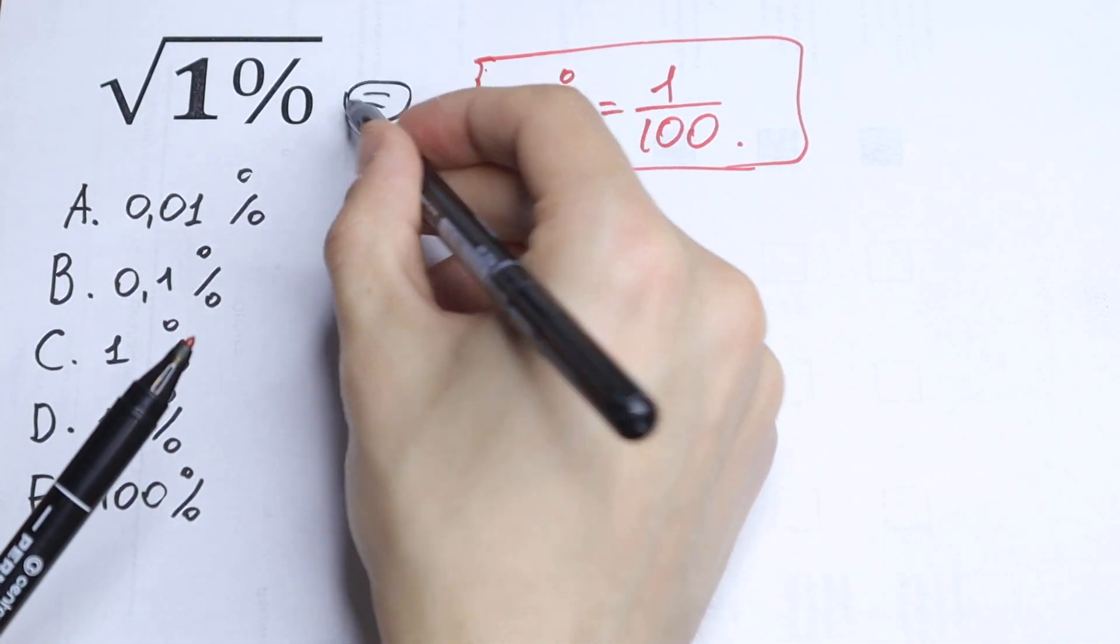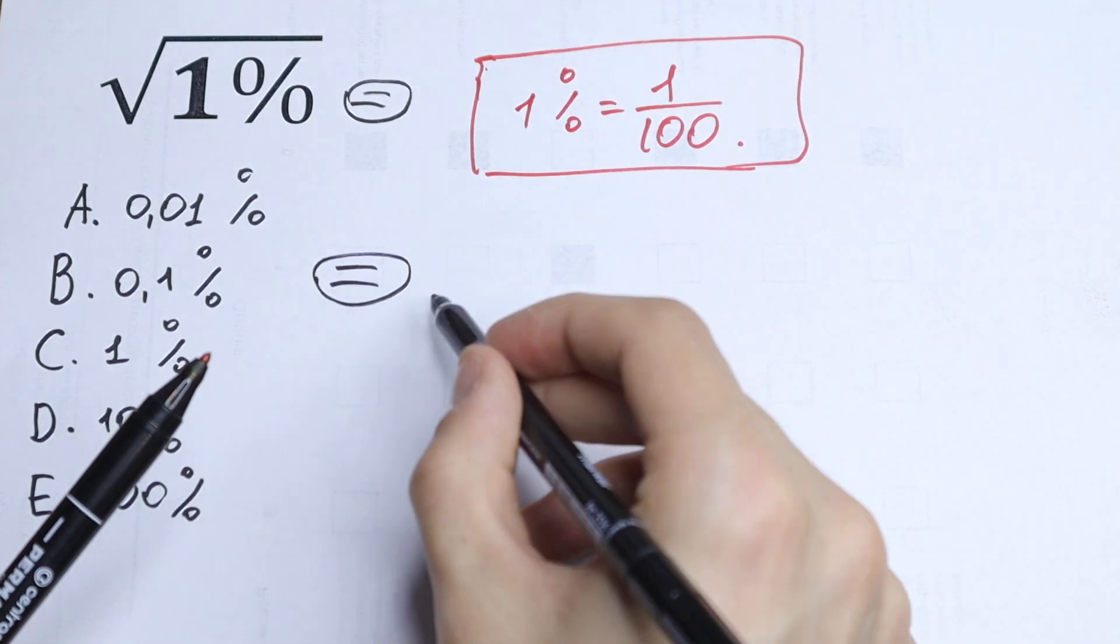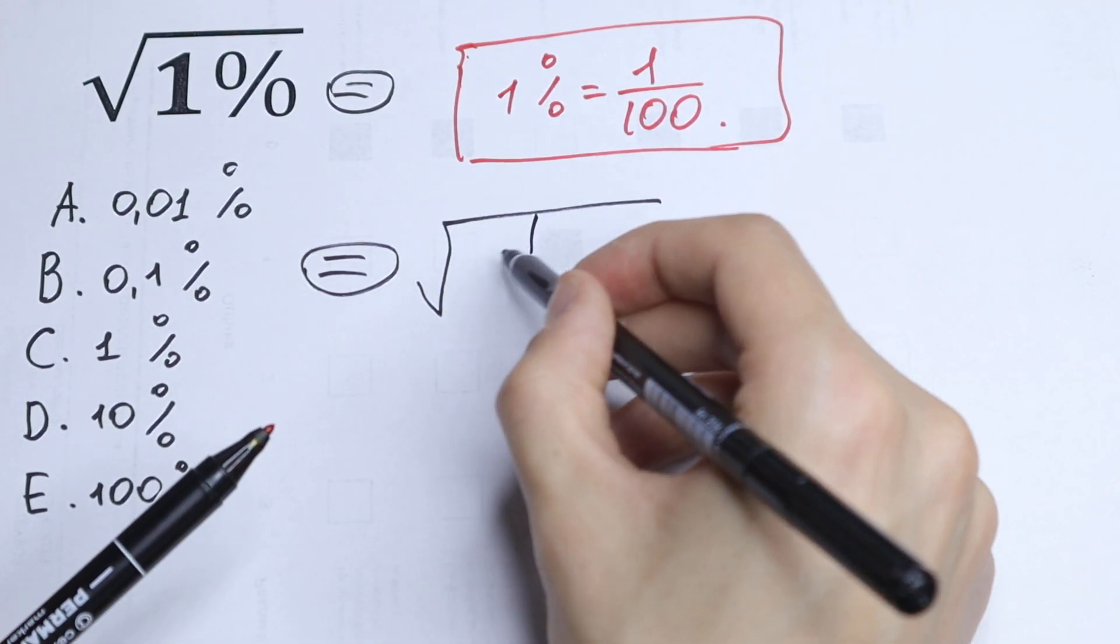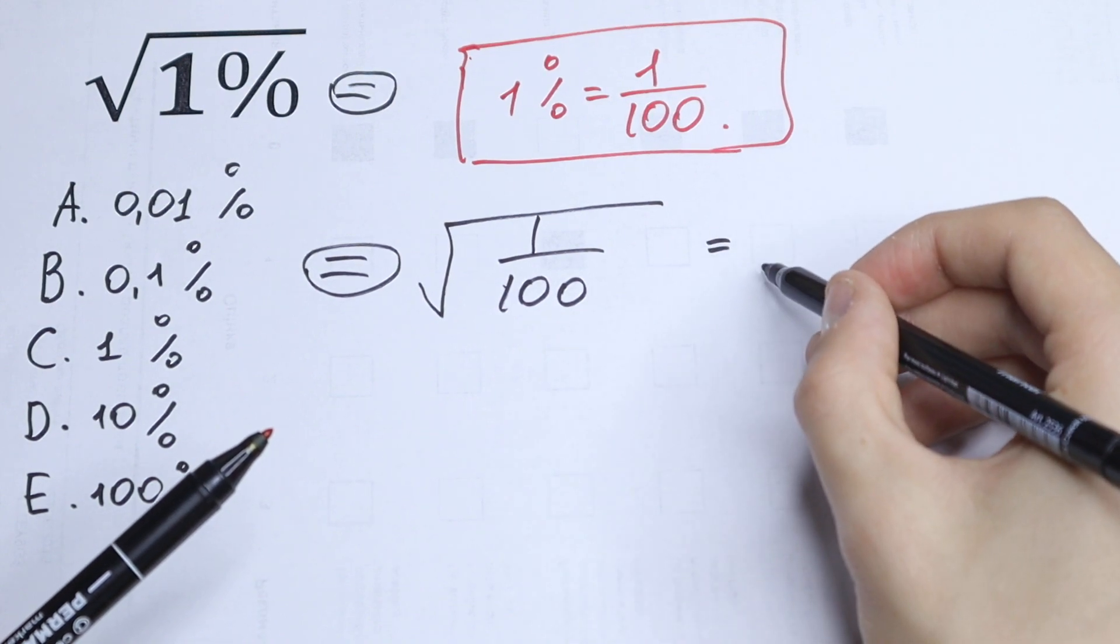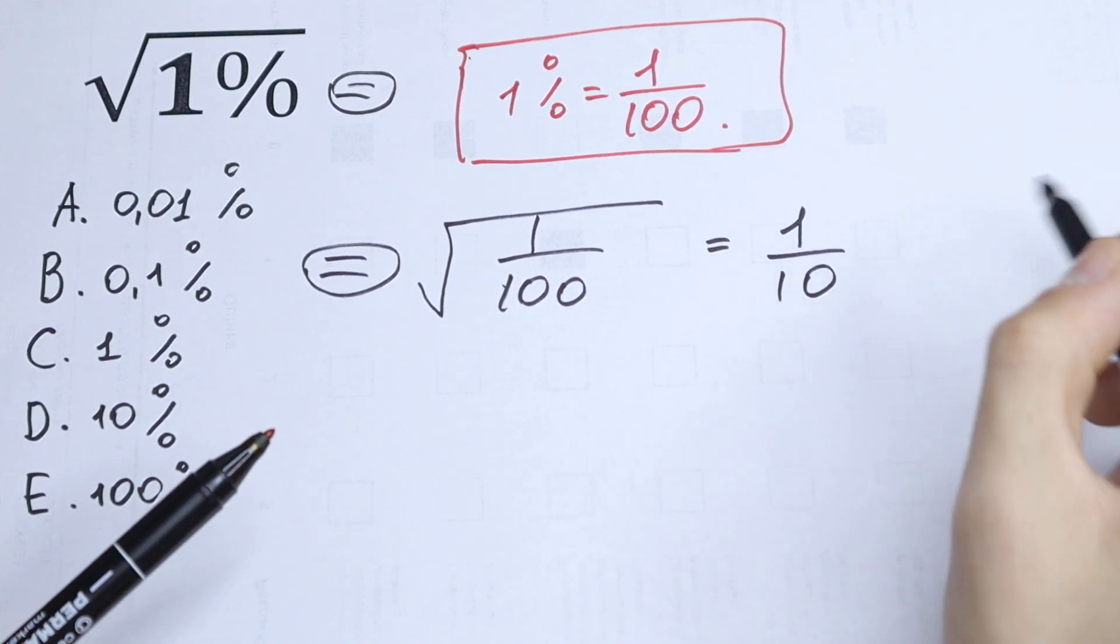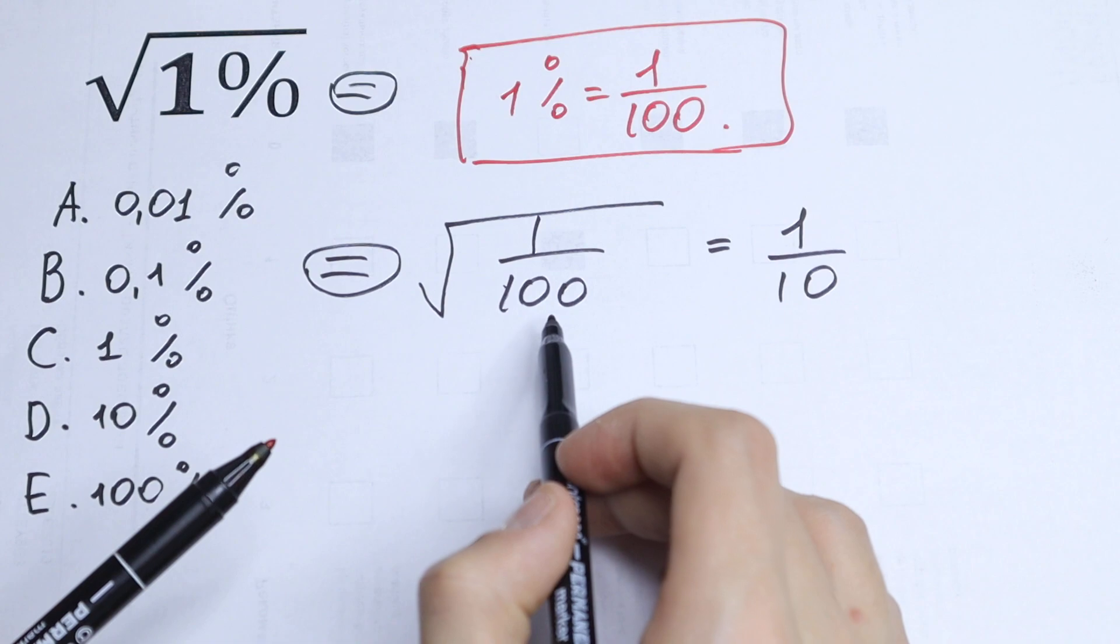So right now we can take this square root of 1 over 100. As a result we will have 1 over 10, taking the square root of both the numerator and denominator.